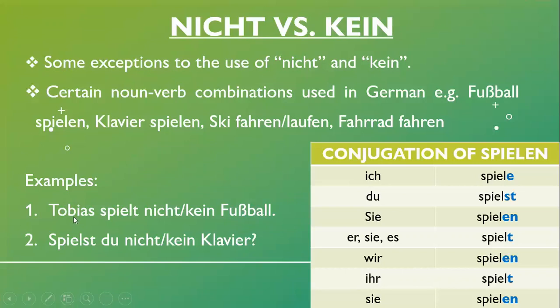Again, the meaning is the same whether you use 'nicht' or 'kein', but only for these specific noun-verb combinations. Do not think that any other verb combined with these nouns will also allow both 'nicht' and 'kein' — that would be wrong. Only for these certain noun-verb combinations can you use either one for negation.